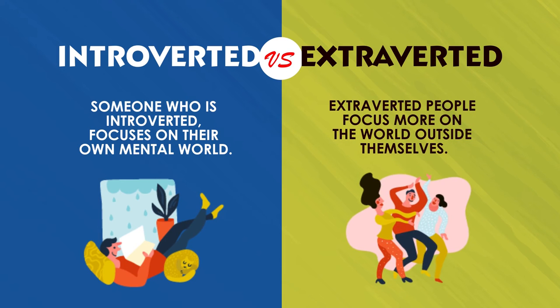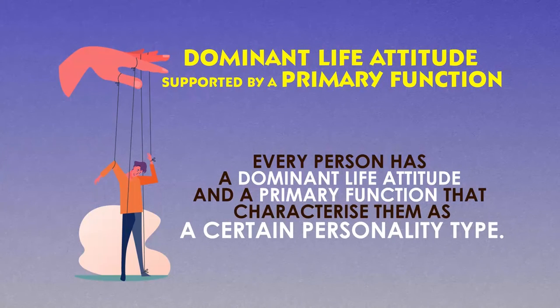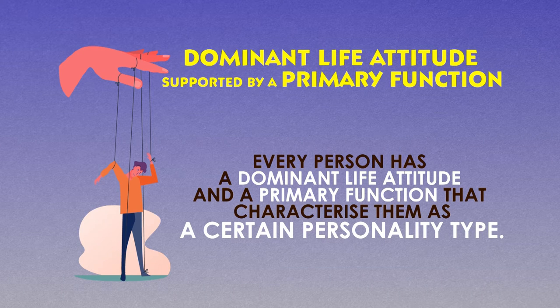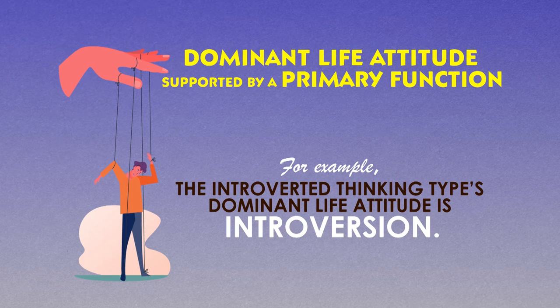Extroverted people focus more on the world outside themselves — they get affected by people and are engaged in conversations. Someone who is introverted focuses on their own mental world; they are withdrawn, isolated, and more into themselves. The last one Jung talked about is dominant life attitude supported by a primary function: every person has a dominant life attitude and a primary function that characterize them as a certain personality type. For example, if a person's dominant life attitude is introversion, then he falls in the category of introversion.